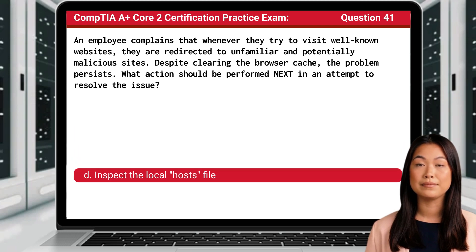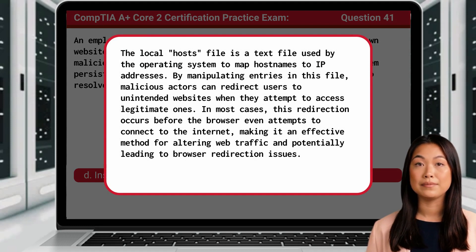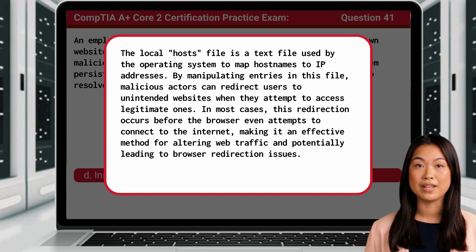The answer is D: Inspect the localhost file. The localhost file is a text file used by the operating system to map hostnames to IP addresses. By manipulating entries in this file, malicious actors can redirect users to unintended websites when they attempt to access legitimate ones. In most cases, this redirection occurs before the browser even attempts to connect to the internet, making it an effective method for altering web traffic and potentially leading to browser redirection issues.